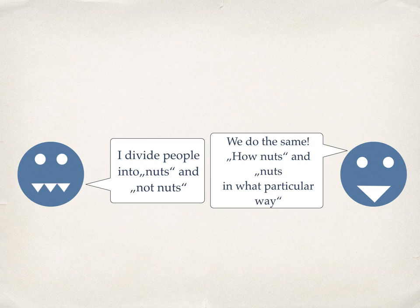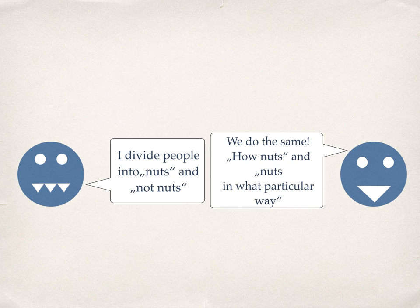McWilliams starts her chapter with a joke. Her friend, who does not believe in psychotherapy, divides people into nuts or not nuts. McWilliams jokingly replies, we do the same. We just ask, how nuts and nuts in what way? Because after all, we are all on a personality spectrum and hopefully we are on the neurotic side.